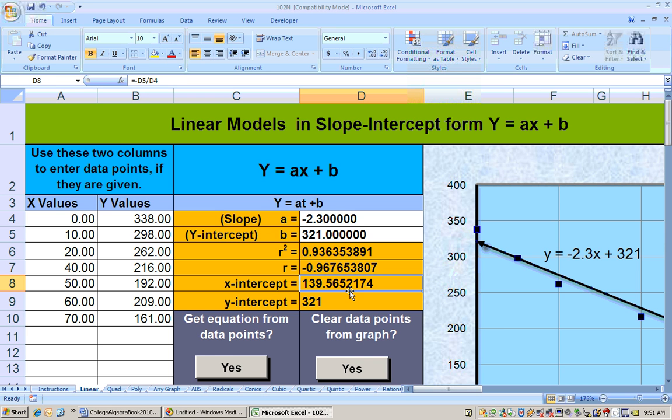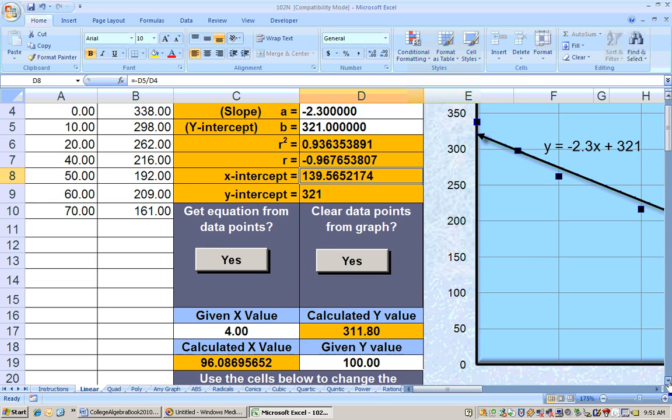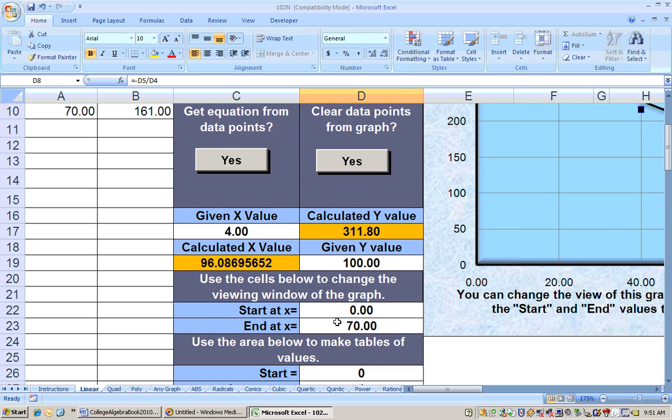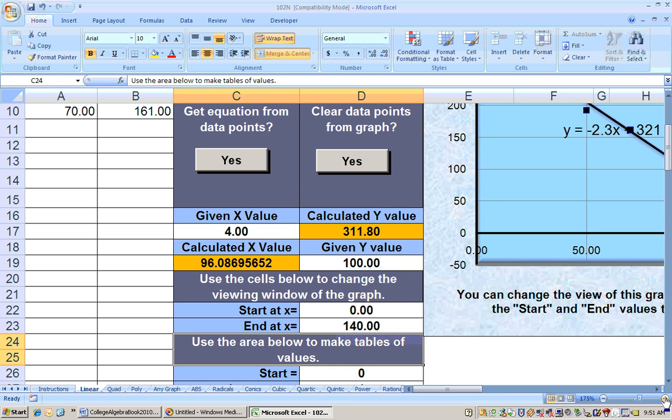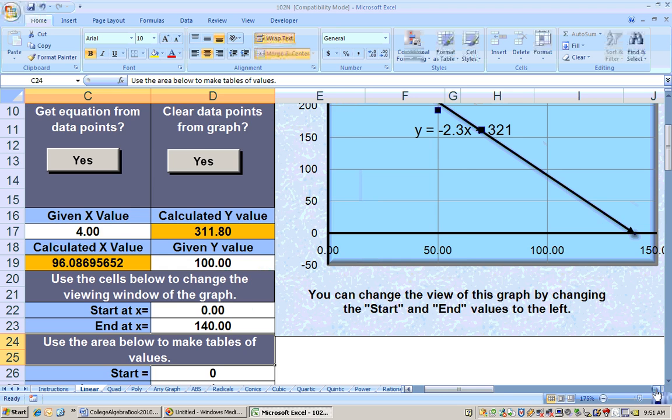Now, the x-intercept is automatically calculated right here. That'd be 139.56, 0. The 139.56 is your t. That means 139.56 years, or 139.57 years after 1920, the winning time is supposed to be 0. We can see that if we change the view of this window here. If we change the viewing window of our graph, we can change the x values. If I go out to, well, we see the x-intercept's about 139. So if I go out to about 140, I should be able to see that x-intercept. And I do.